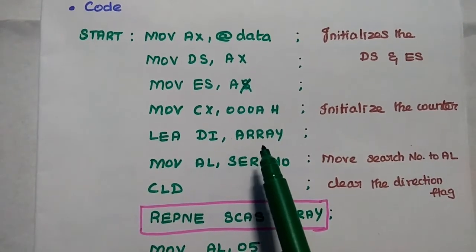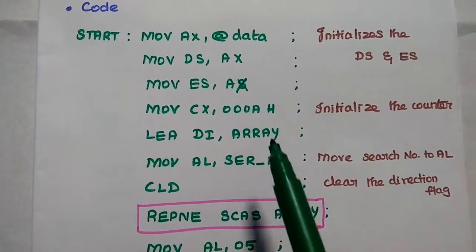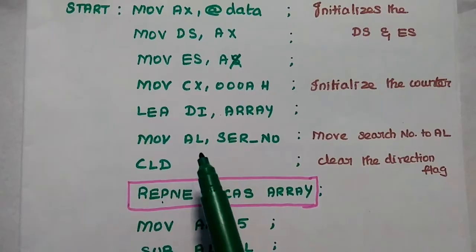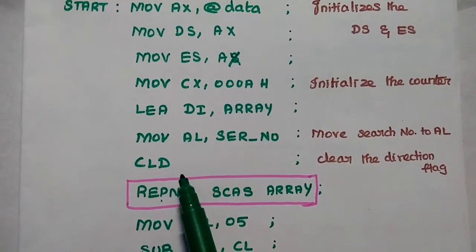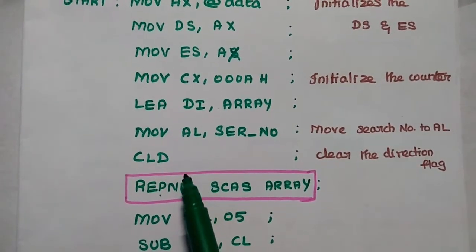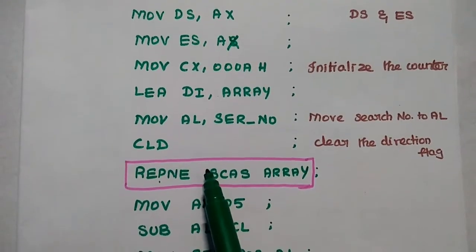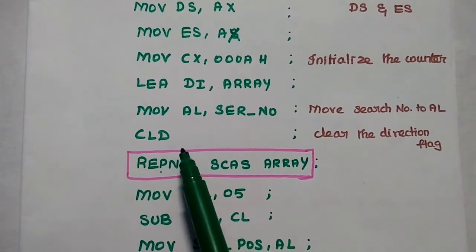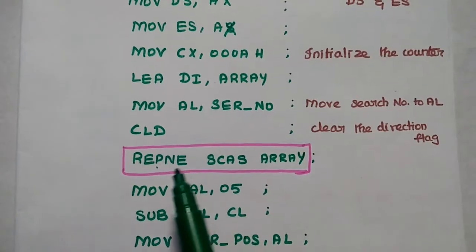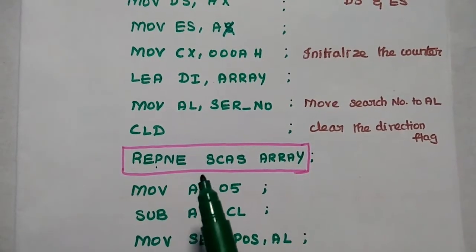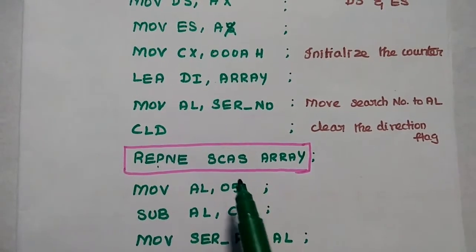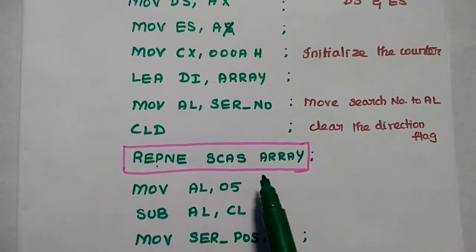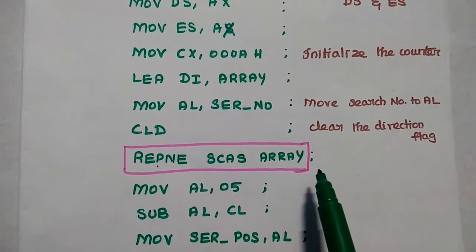We get the first data from the memory address, then move the search number to the AL register. We clear the direction flag so that once the search number is identified in the array, we can enable the direction flag. This next instruction is very important in the search operation because it finds the position of the given number in the array.